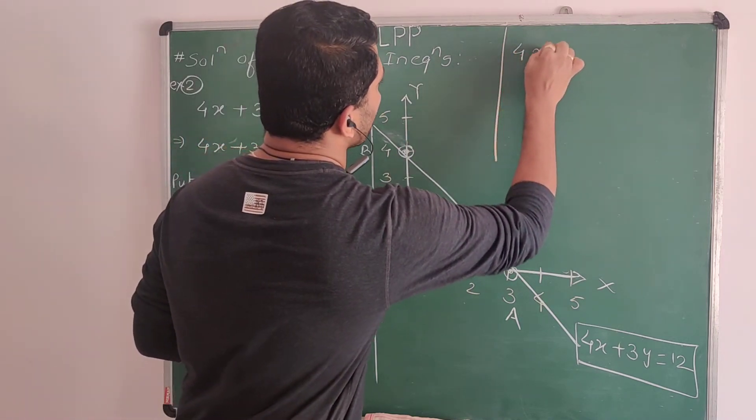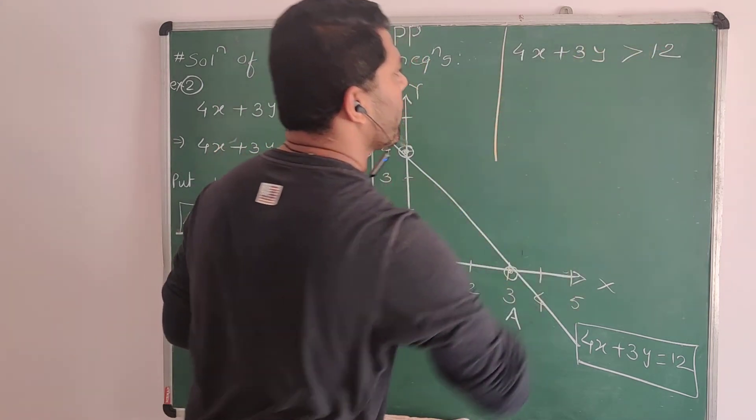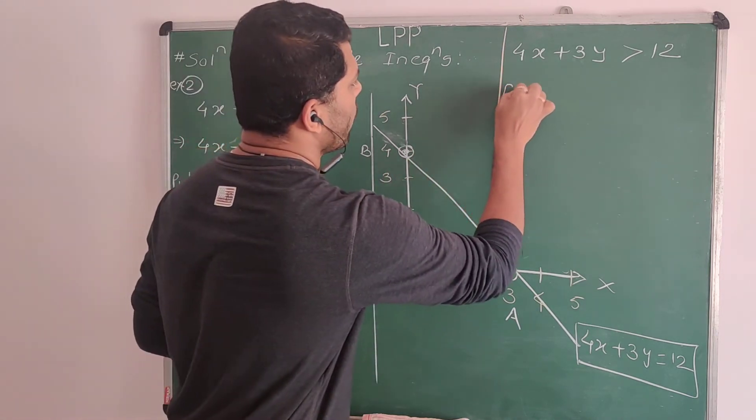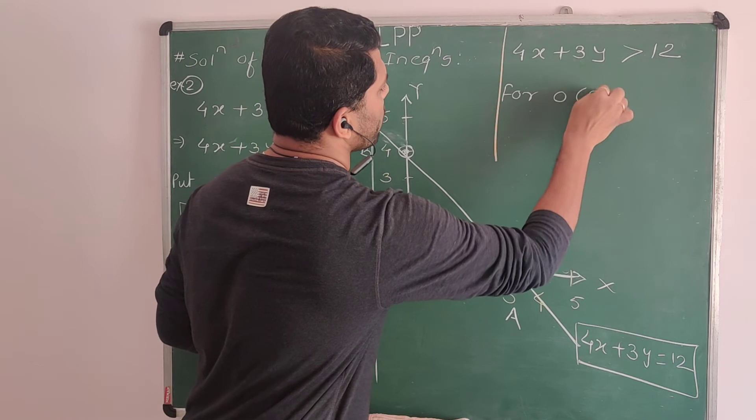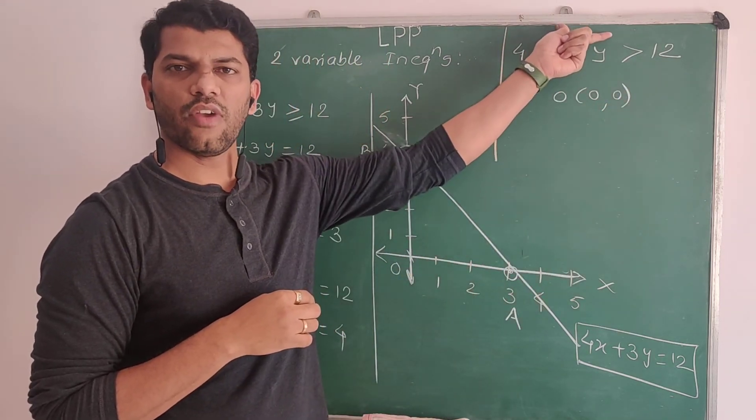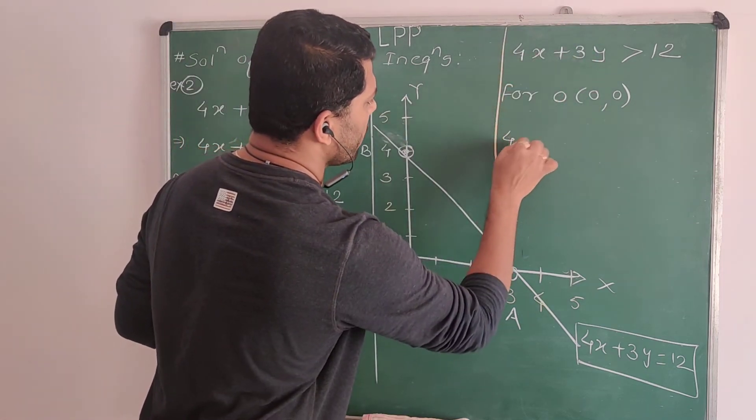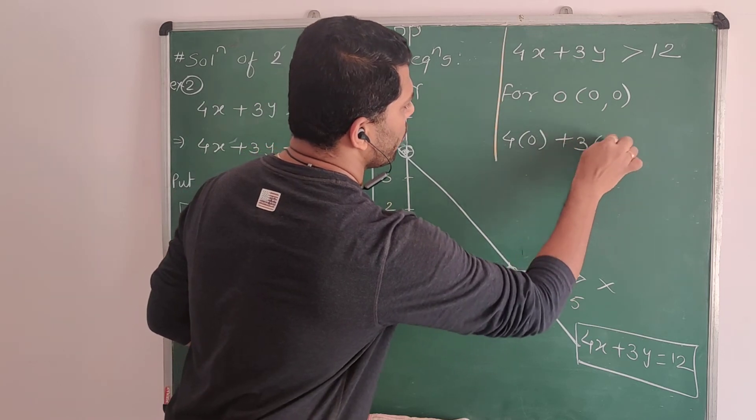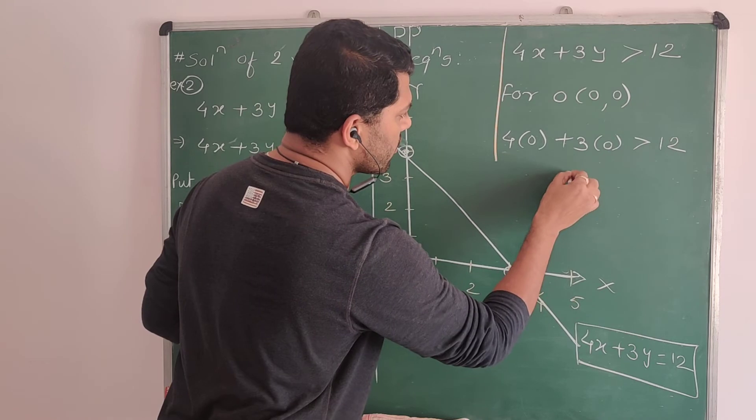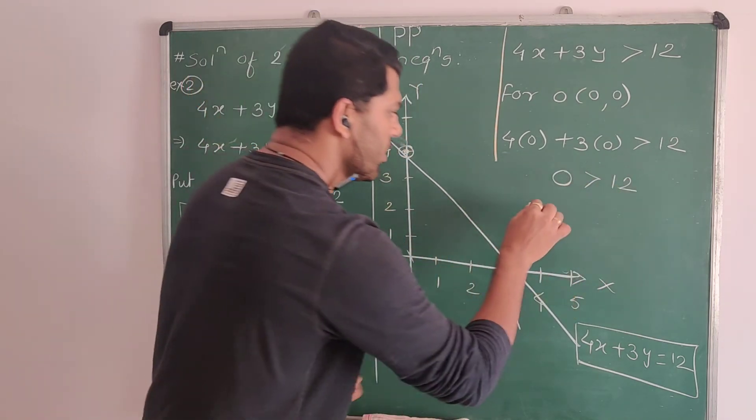The inequality is 4x plus 3y greater than 12. I am taking help of this origin. For this origin, let's cross-check whether the origin satisfies this inequality or not. I am substituting this origin in this inequality: 4×0 plus 3×0 greater than 12. If you saw this, it's 0 greater than 12. Is it valid? No. It is invalid.